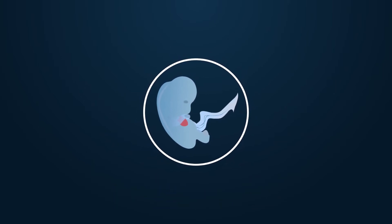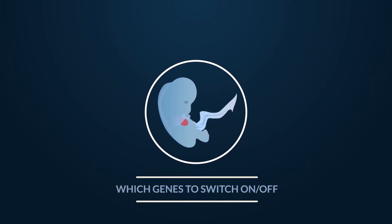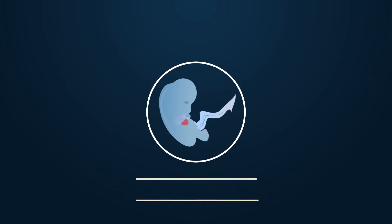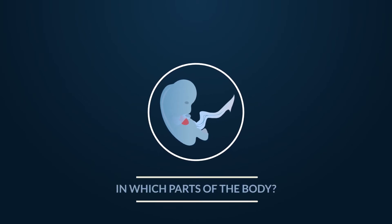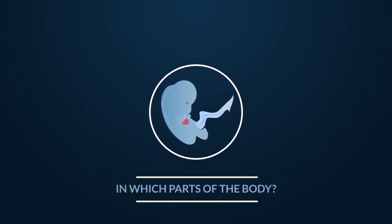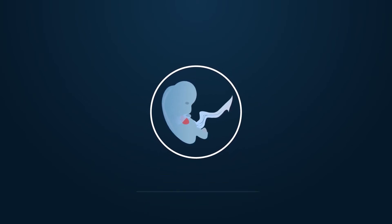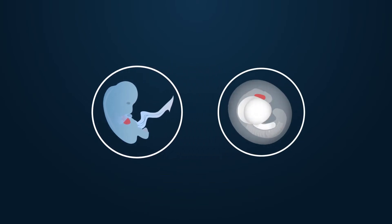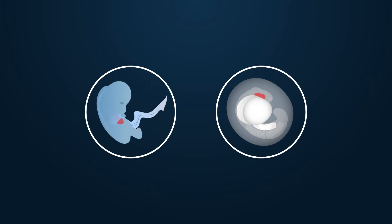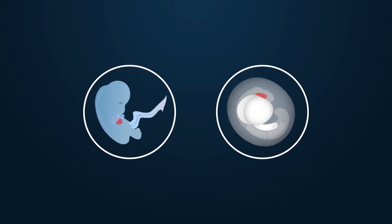But how do our cells know which genes to switch on and off, when and in which parts of the body? To answer these questions, we can use the zebrafish to model what happens in humans.